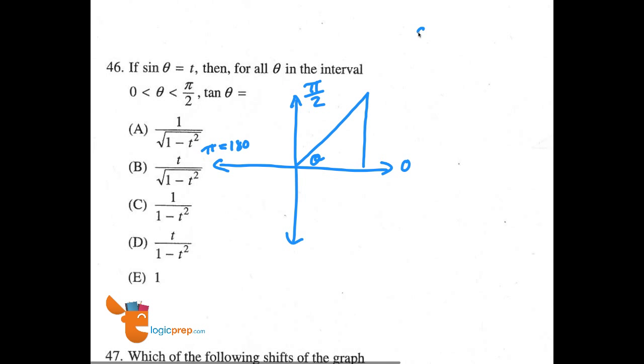Now they tell us that the sine of theta is equal to t. Well, that's the same as saying that the sine of theta is equal to t over 1, because we know t divided by 1 is simply t. And we also know that sine of an angle is equal to the opposite over the hypotenuse side. So in this case, t over 1 is equal to opposite over hypotenuse. So from here, the opposite is t, and the hypotenuse is 1.